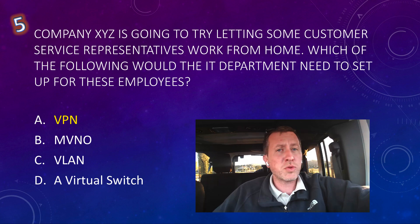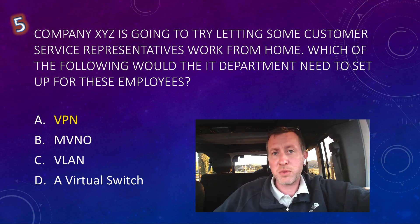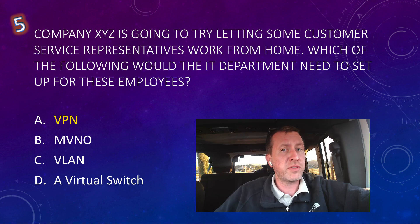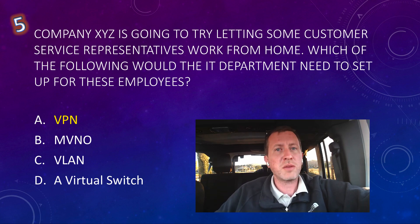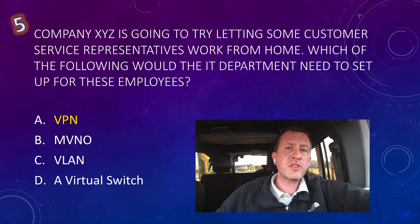Option D is a virtual switch. When working with virtual servers such as VMware, VirtualBox, or Microsoft Hyper-V, a virtual switch defines what virtual machines are allowed to connect to, including assigning VLANs to them. But a virtual switch is not the correct option here. We are looking for option A, the virtual private network or VPN. Let's move to question number six.